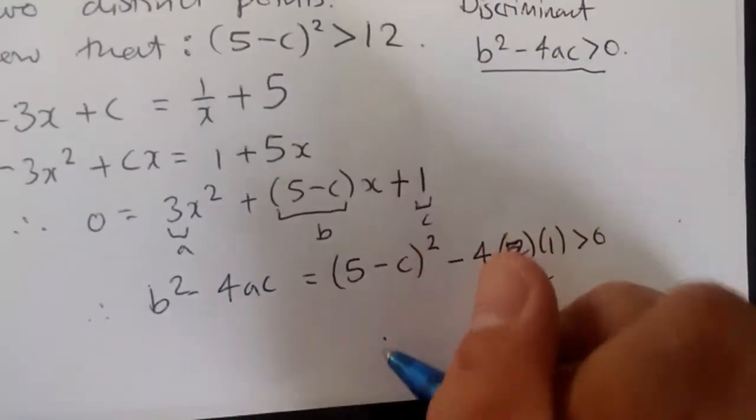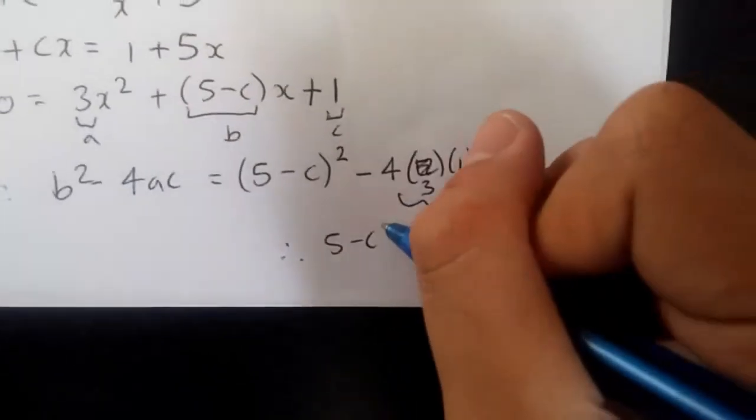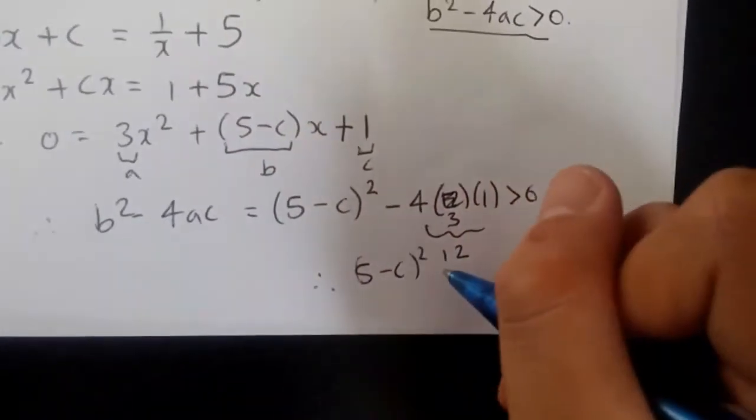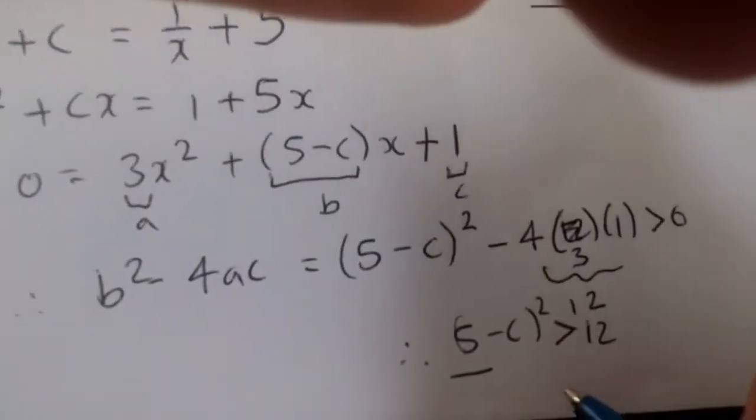Yeah, for some reason, I was doing it in my head the whole solution. So, therefore, we get 5 minus c squared greater than 12. And that's it, guys. That's really it.